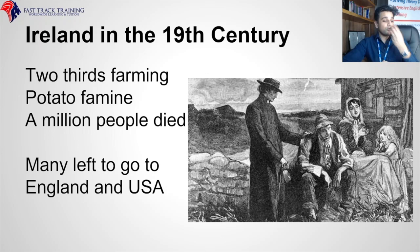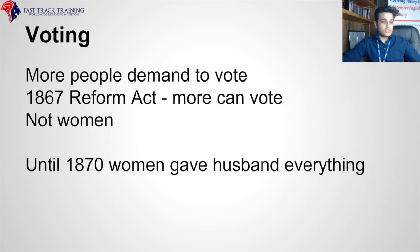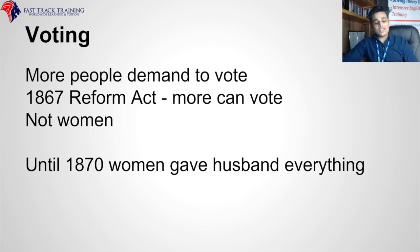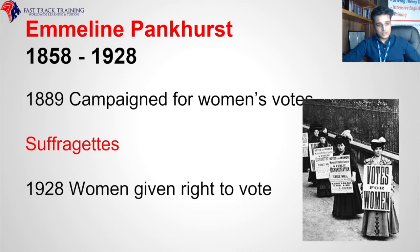Next: voting. More people demanded the vote, and in 1864 there was the Reform Act — more people could vote, but still not women. Until 1817, women gave everything to their husbands. Women had no right to own property, no right to vote. Emmeline Pankhurst, 1858 to 1928, heroically fought for the vote and basic equality between men and women.